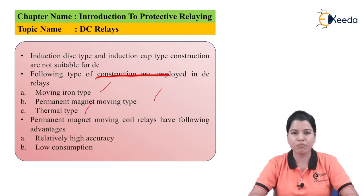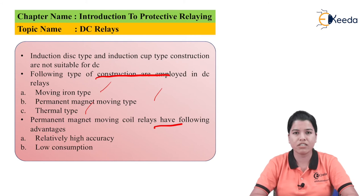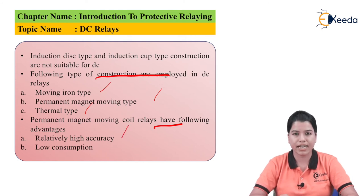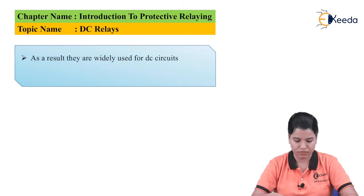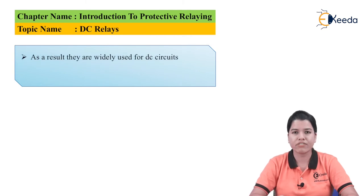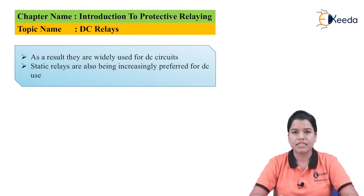The permanent magnet moving coil relay has the following advantages: first, relatively high accuracy; second, low consumption of power. Because of these factors, these relays are widely used in DC circuits. Static relays are also increasingly preferred for DC circuits.